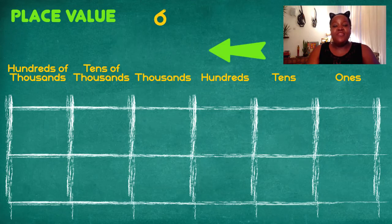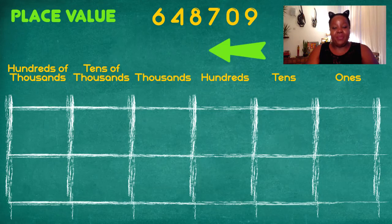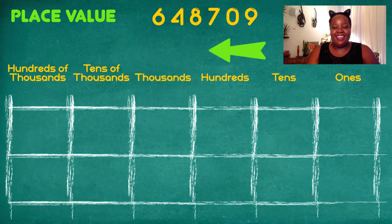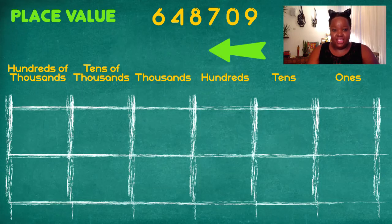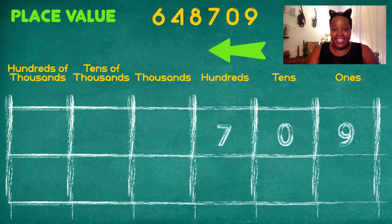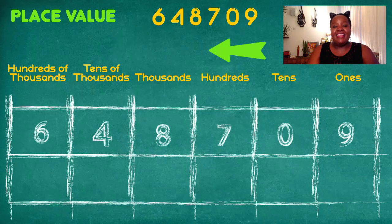Now let's take another number: 648,709. I want us to place each digit in its correct value box. Remember, when we plot the numbers we always go from right to left. In the number six hundred and forty-eight thousand, seven hundred and nine, each digit has a unique position. Starting from the right: nine in the ones, zero in the tens, seven in the hundreds, eight in the thousands, four in the tens of thousands, six in the hundreds of thousands.